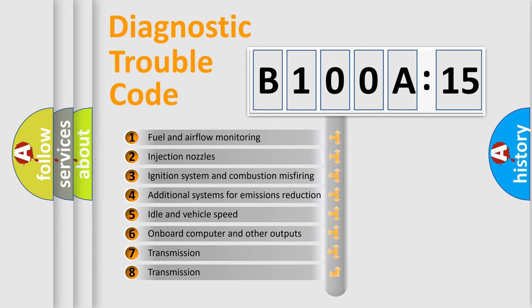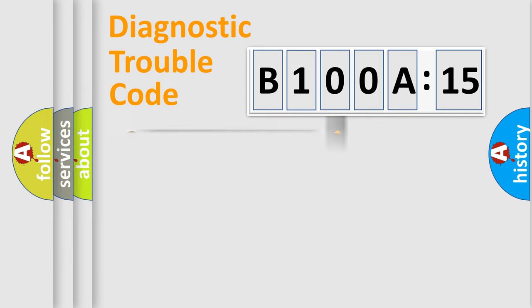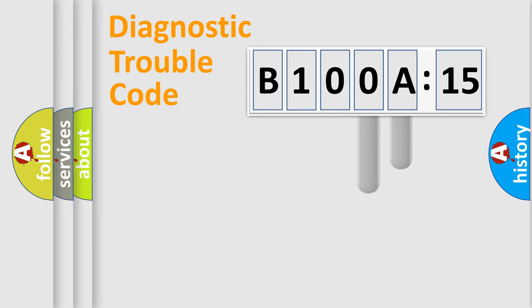The third character specifies a subset of errors. The distribution shown is valid only for the standardized DTC code. Only the last two characters define the specific fault of the group.